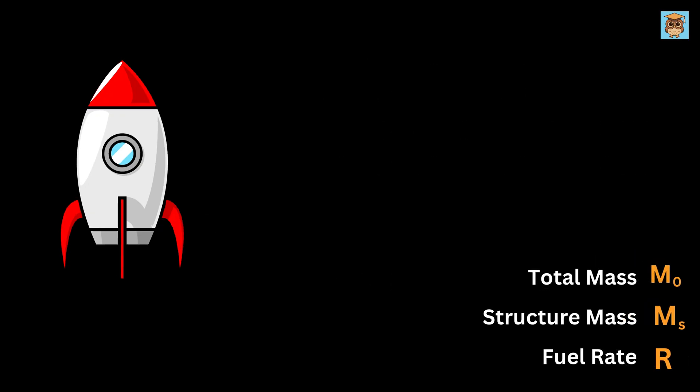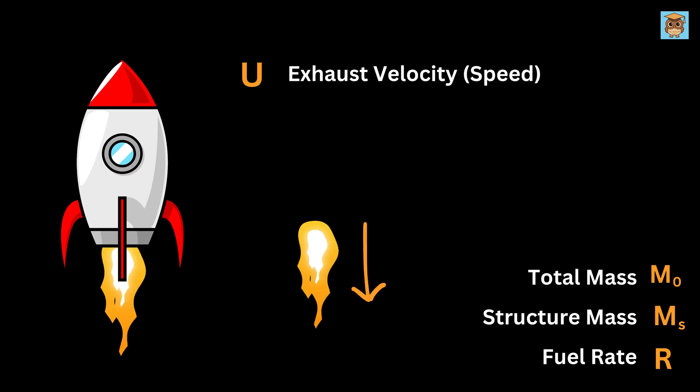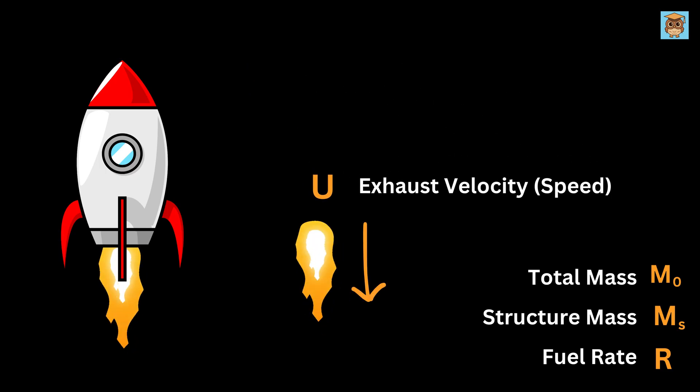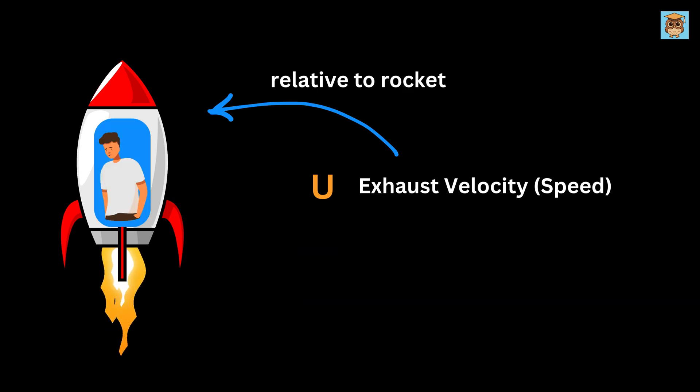Now let us talk about another important variable u, which is called the exhaust velocity. When the rocket burns its fuel, it turns it into hot gases and blasts them out of a nozzle at the bottom. This speed u is how fast those gases are moving when they leave the rocket, and it's always the same speed as long as the rocket's engine is designed that way, which means this u is also a constant value. Here's the key thing: u is measured relative to the rocket itself.